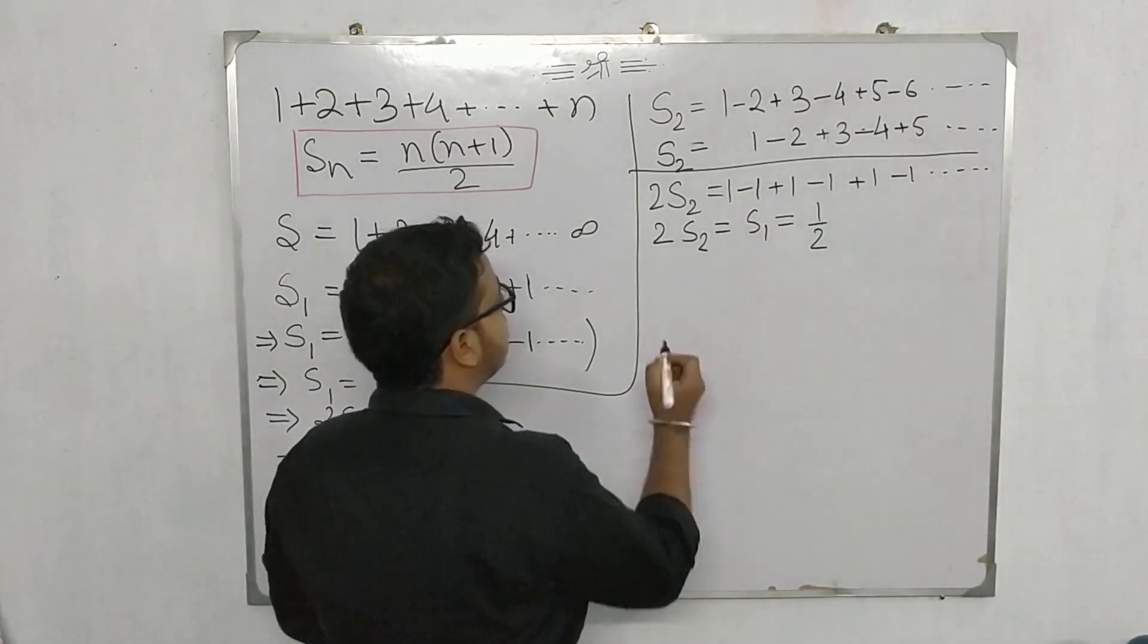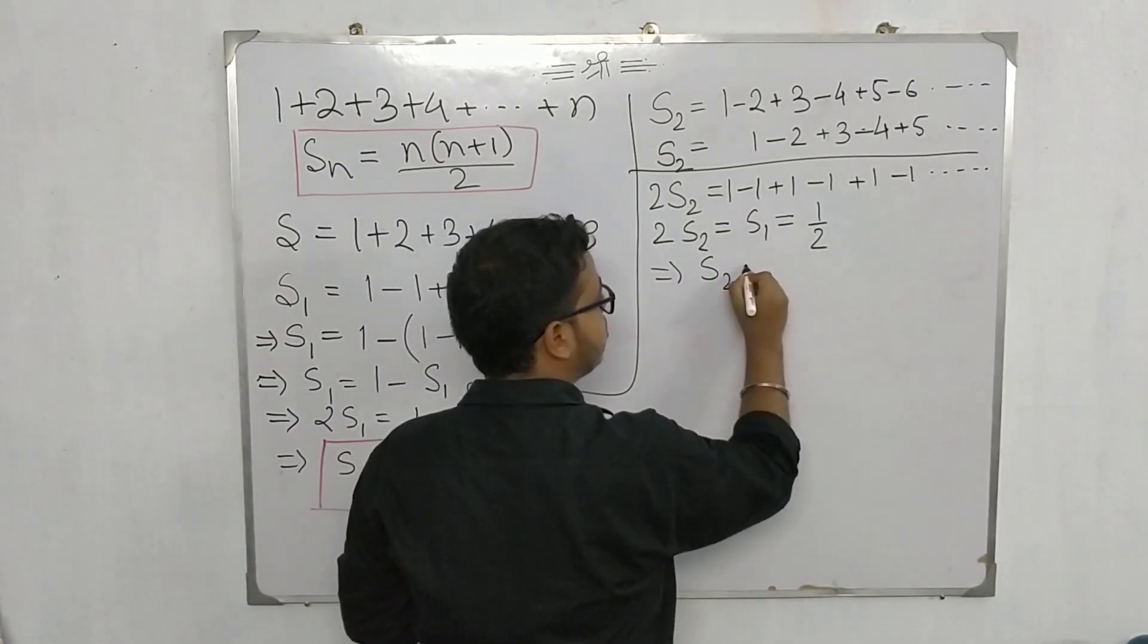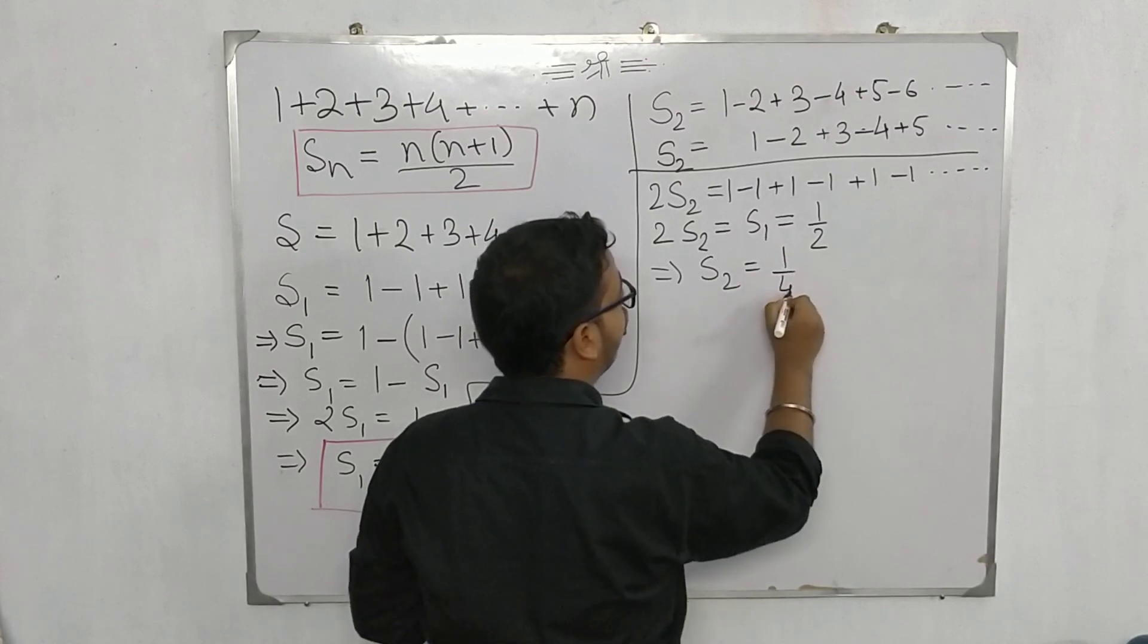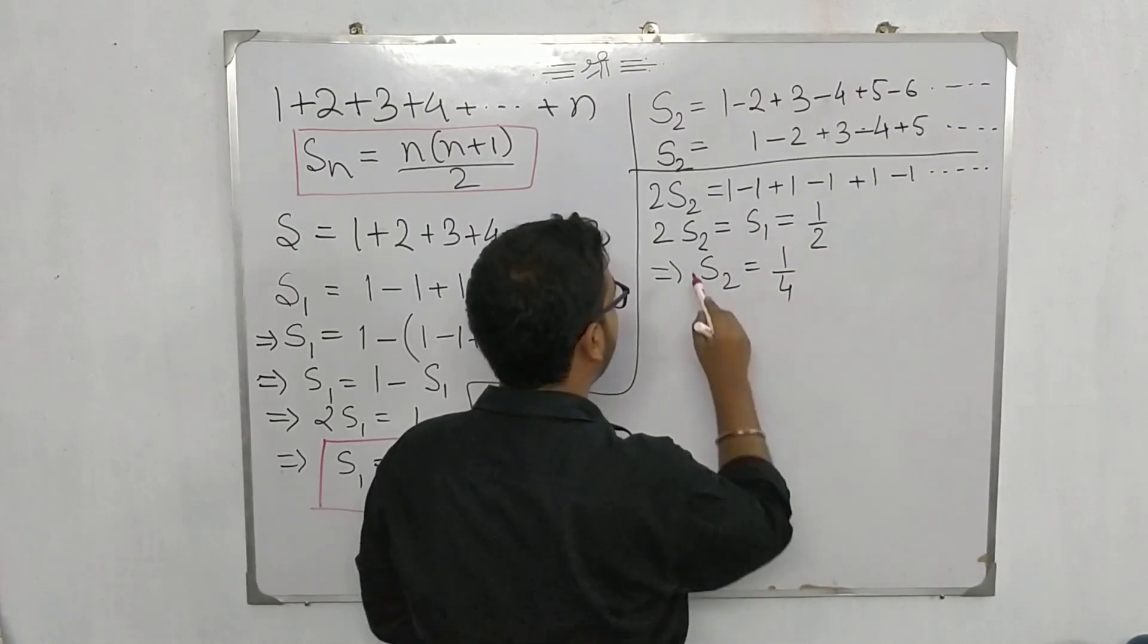So 2s₂ is equal to s₁, and this can be written as 1/2 because s₁ we have already calculated to be 1/2. This implies s₂ would be 1/4 if we divide both sides by 2.